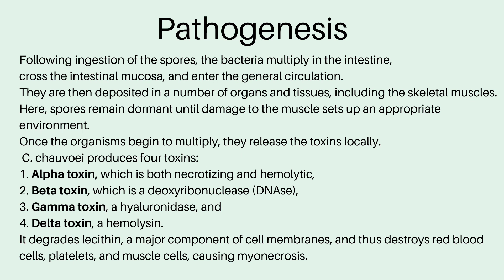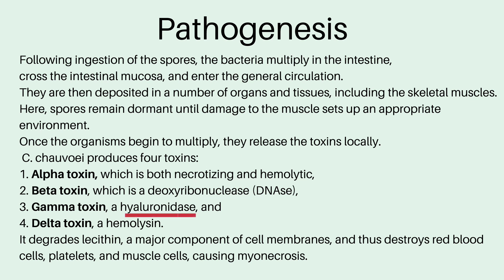Clostridium chauvoei produces four types of toxins: alpha, beta, gamma, and delta. Alpha toxin is both necrotizing and hemolytic — necrosis being the death of cells or tissue and hemolysis being the breakdown of red blood cells. Beta toxin is a deoxyribonuclease, gamma toxin is a hyaluronidase, and delta toxin is a hemolysin. It degrades lecithin, which is a major component of cell membranes, thereby destroying red blood cells, platelets, and muscle cells causing myonecrosis.